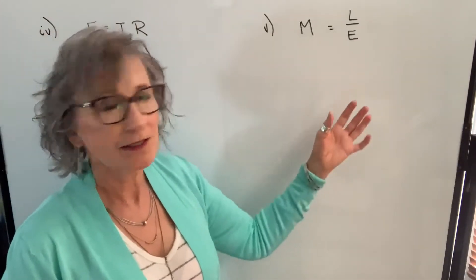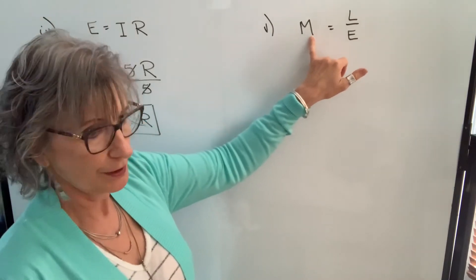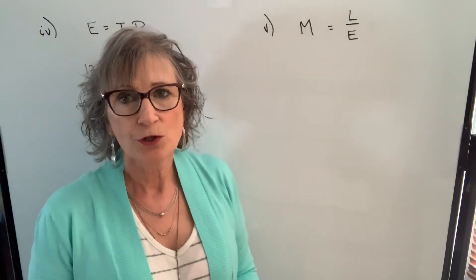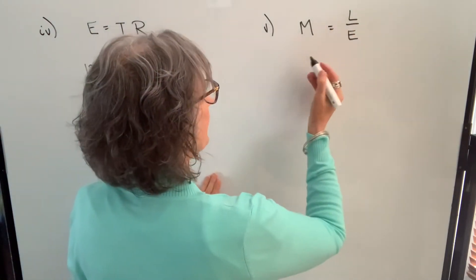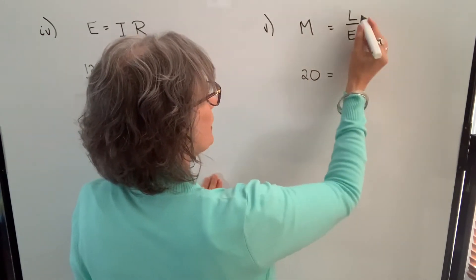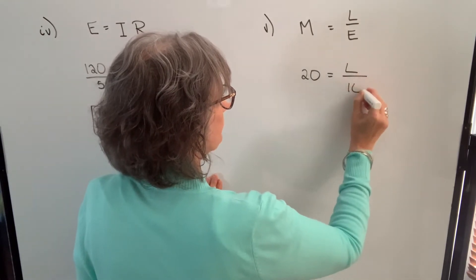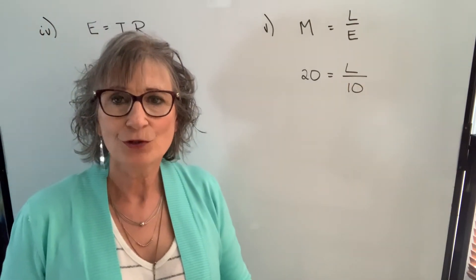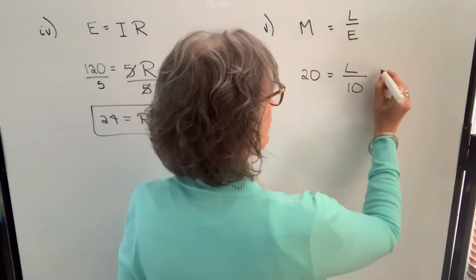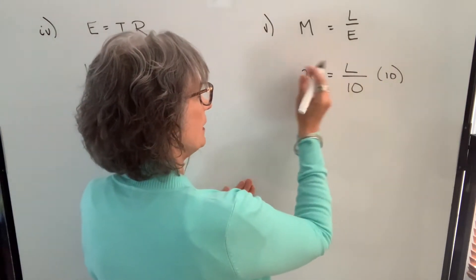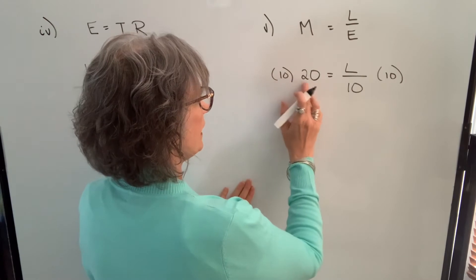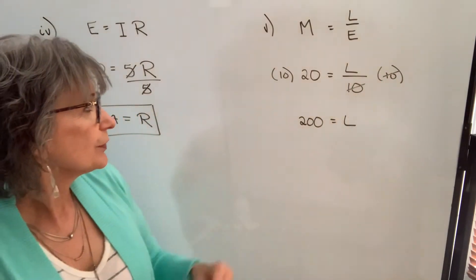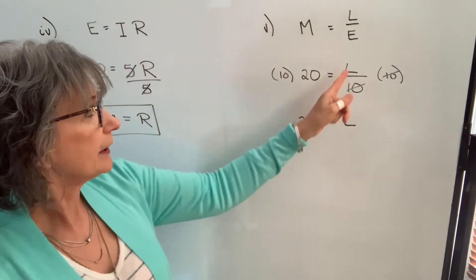Another formula is mechanical advantage, defined as load (output force) divided by effort (input force). If mechanical advantage is 20 and effort is 10, we solve for L. Since L is being divided by 10, the inverse operation is multiplication. We multiply both sides by 10 — the 10 cancels — giving us L equals 10 times 20, which is 200. So an input force of 10 pounds yields an output force of 200 pounds.